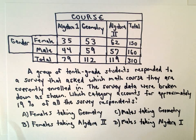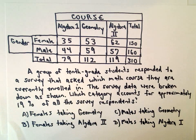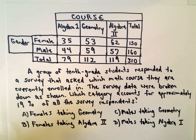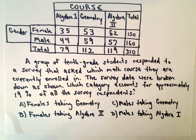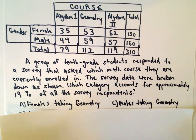We can use a calculator on this, so it should be pretty straightforward. All we'll do is calculate the different percentages and see which one is closest to 19%. Let's run through them all real quick.